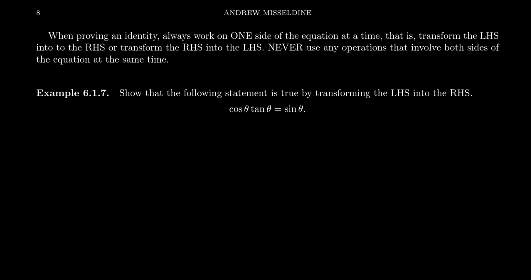So before we prove the trigonometric identity, let me show you why we never do operations on both sides of the equation at the same time. Let's prove the following. I have a theorem for you. The theorem is that one equals negative one. Now, you might be laughing at me right now. This is a false statement. One's not equal to negative one. Well, here's the proof.